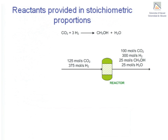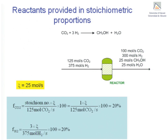Let's now look at how conversion is calculated when two reactants are supplied in stoichiometric proportion. In this case, the extent of reaction is 25 moles per second. Therefore, the conversion of CO2, calculated using stoichiometric coefficient 1, comes to 20%. For hydrogen, with stoichiometric coefficient 3, it also comes to 20%. When reactants are provided in stoichiometric proportion and are not separated into different streams, the conversions of both reactants are equal, so it is not necessary to specify which reactant the conversion refers to.